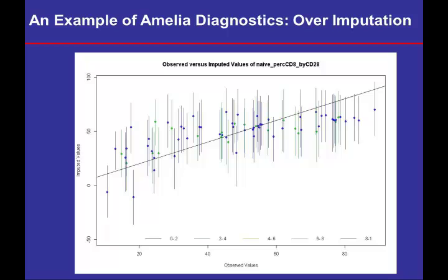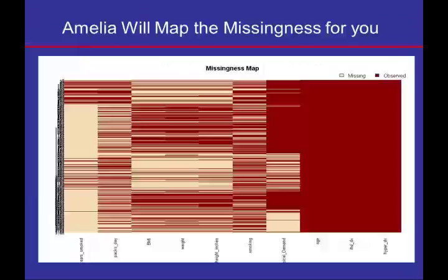This over-imputation diagnostic doesn't look too bad for a quick run. Amelia will also map the missingness for you, and I would urge everybody to do this. It shows observation numbers and where data are missing, including whether sequential patient ID numbers have missing body mass index and weight observations within a set time period, which may or may not be of interest.